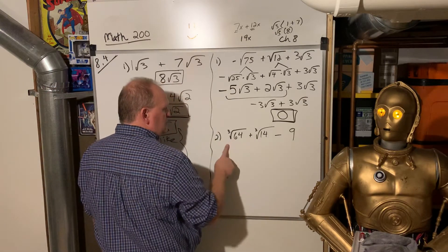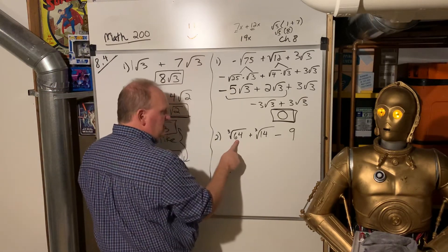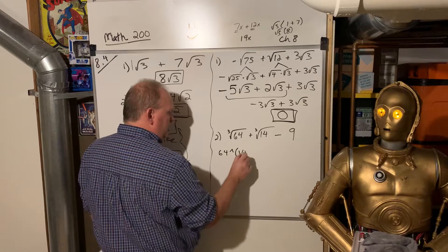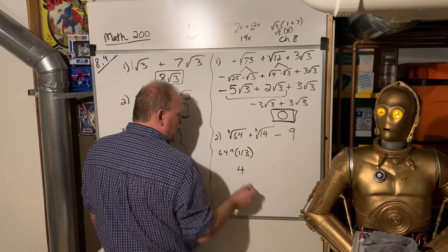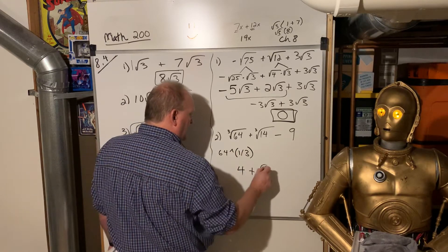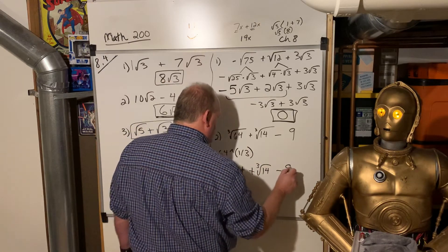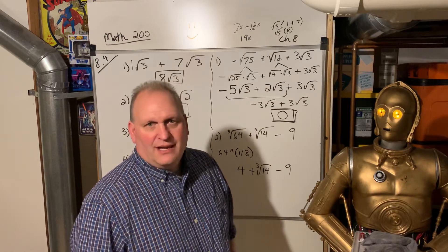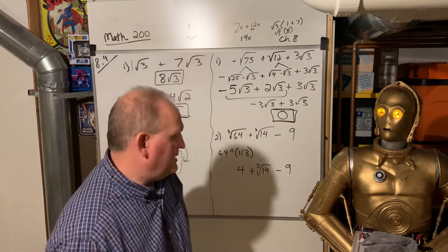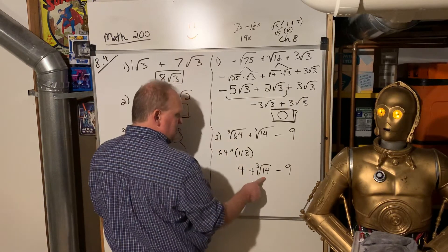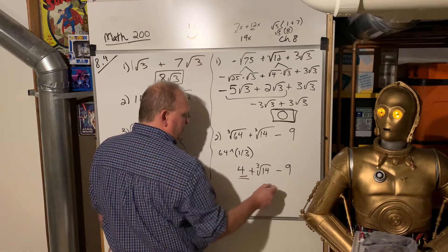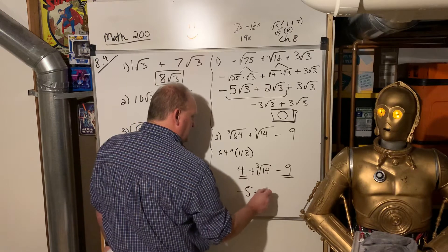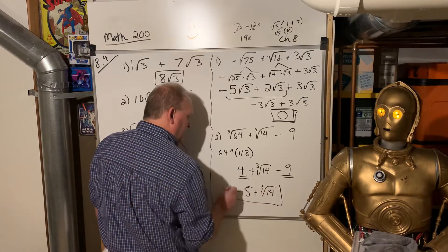Number 2: the cube root of 64 — that's a perfect cube already. You could do that in your calculator: 64 to the power of (1/3) is 4. So we got 4 plus the cube root of 14 minus 9. I can't do anything with the cube root of 14 — that is 2 times 7, and neither are perfect cubes, so that stays. But I can put 4 and negative 9 together and get negative 5 plus the cube root of 14. And that's it.